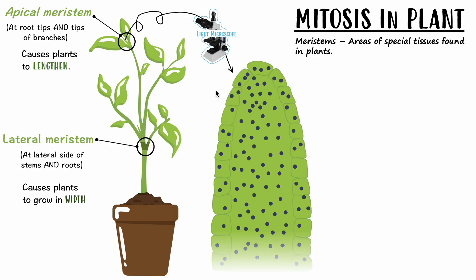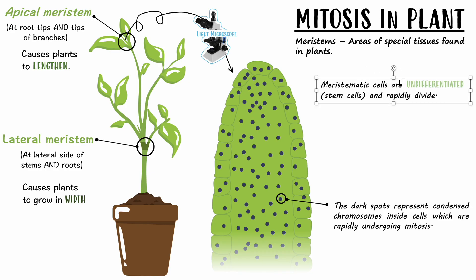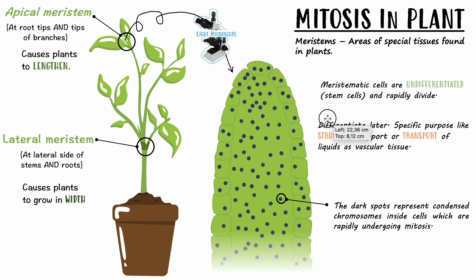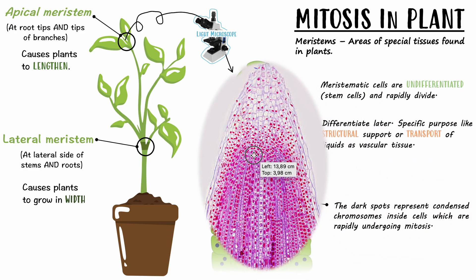We should be able to look at this area under a light microscope and see something interesting. You can see lots of cells undergoing mitosis — their nuclei are condensed, meaning they're actively dividing. The dark spots represent condensed chromosomes inside cells rapidly undergoing mitosis. These areas are just stem cells dividing over and over. You should know they are undifferentiated because they're stem cells, so they don't have any specific function yet.